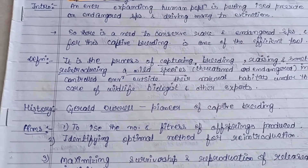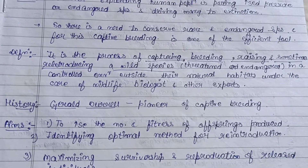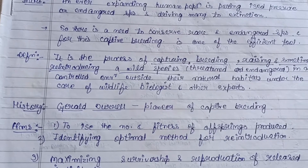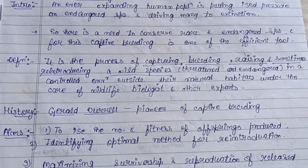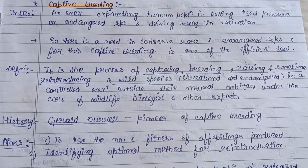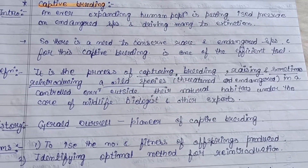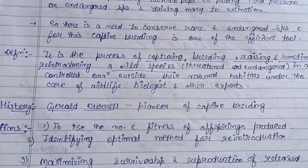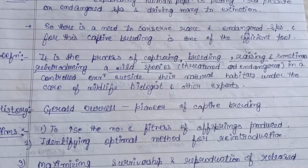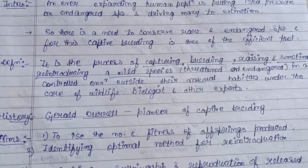The aims and purposes of captive breeding: first is to increase the number and fitness of offspring produced, since in the natural habitat of an endangered animal it is problematic to survive and produce offspring. Second is identifying the optimal method for reintroduction based on behavioral and other properties of the animal.